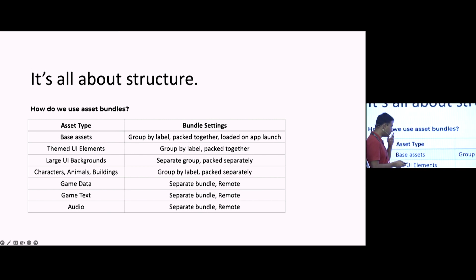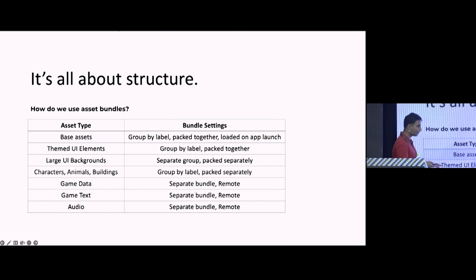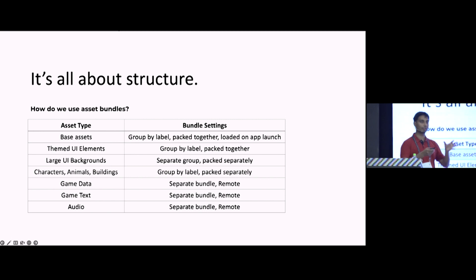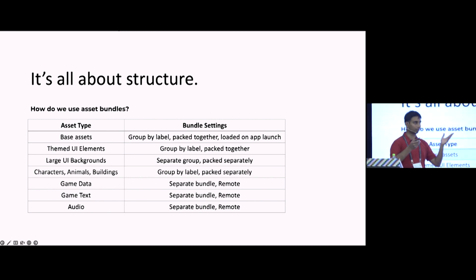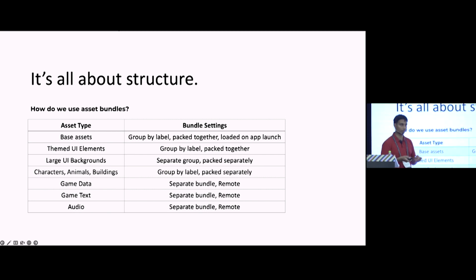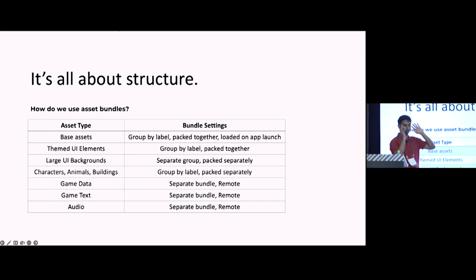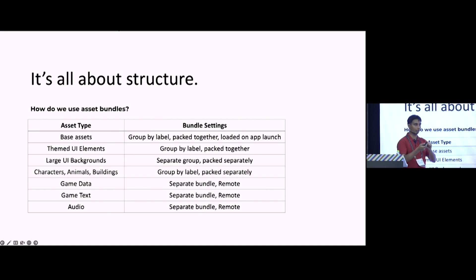What this means is you need to understand your assets and structure them carefully. Here's the basic template we use in our games: first, base assets — things like buttons and textures the player sees everywhere — pack them together and load them at the start of the game, just like Resources used to work. Then UI elements categorized by theme: group all assets for a particular level section together, load them when the player enters that section, and release them when they leave.